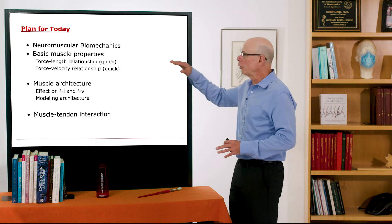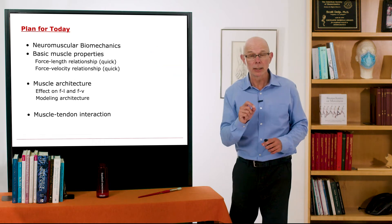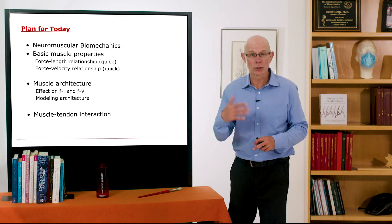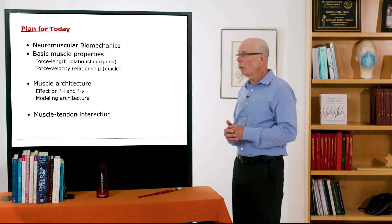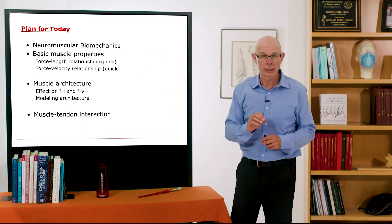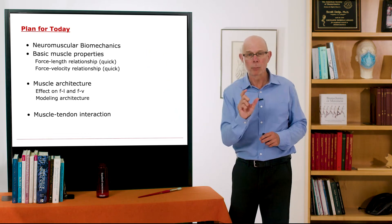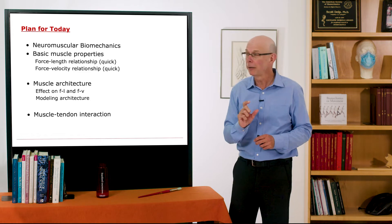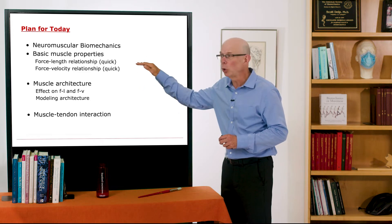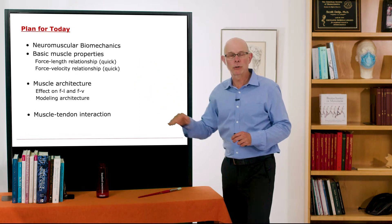Last time we talked about neuromuscular biomechanics and particularly activation of muscle, how we get from a nerve into the muscle to control activation. What I want to do now is do a quick review of the muscle force-length and velocity relationships with a little bit more mathematical specificity, and then we'll talk about muscle architecture.